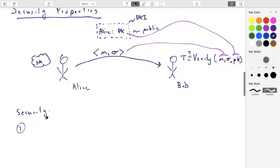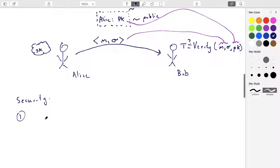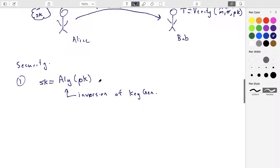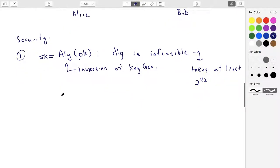So there is some way to compute the secret key that corresponds to a public key. What we want to do is we want to make sure that this algorithm, call this an algorithm that would take as input someone's public key and produce the secret key. This is kind of an inversion of the keygen algorithm. It's the keygen run backwards. We want to make sure that if this exists, the algorithm is infeasible, meaning it takes at least 2^112 operations in order to complete this algorithm.